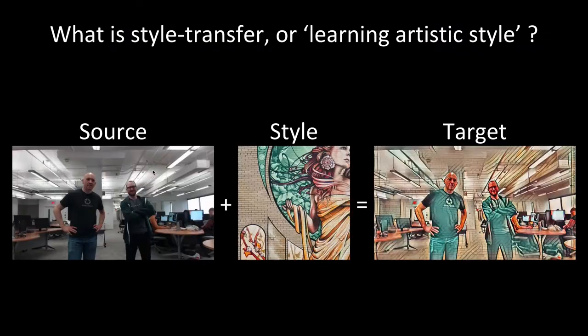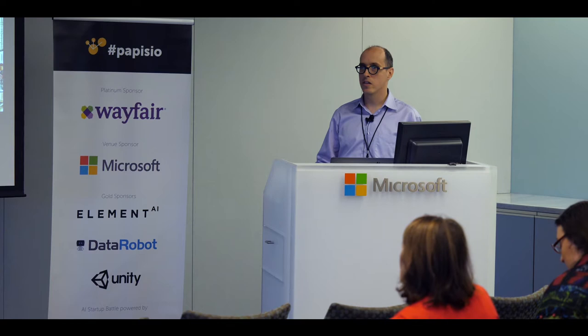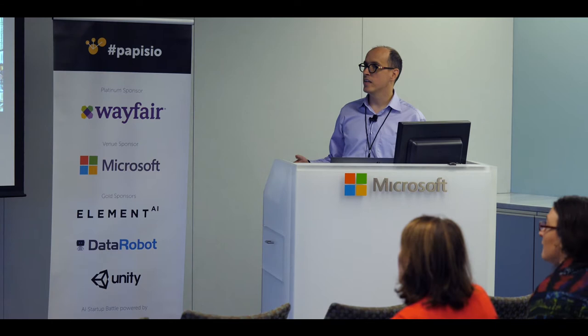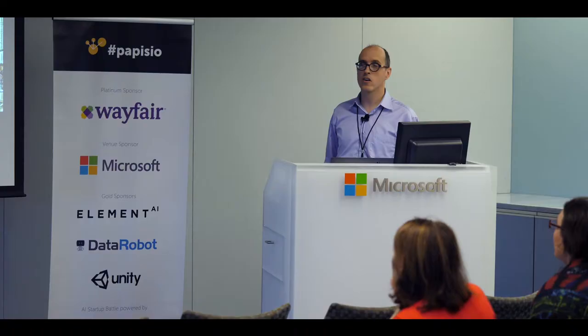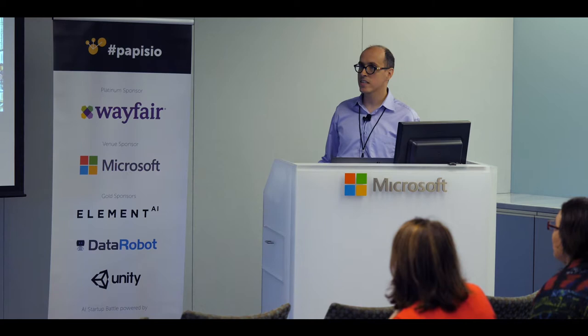In style transfer, you start from a source image — the image you want to transform. Here you see my two colleagues Phil and Jean — this is the first time this thing started working. You start also with a style; this is a mural from Montreal called Notre Dame de Grasse. Basically what you obtain is a resulting image which combines the style of the artwork you want, but also contains all the high-level information of the source. So if you look at it, you readily recognize the image. It's sort of copying the style of an artist, and the task is to have a machine learn this style.